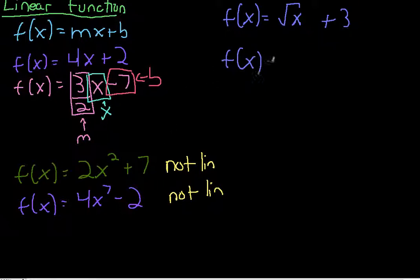What else might not be? If you have x in the denominator, maybe you had 1 over x minus 7, this would not be linear as well.